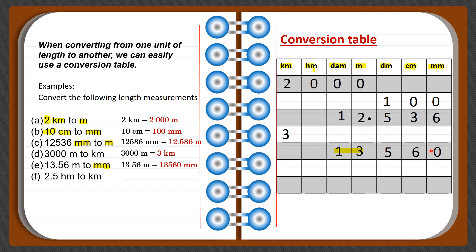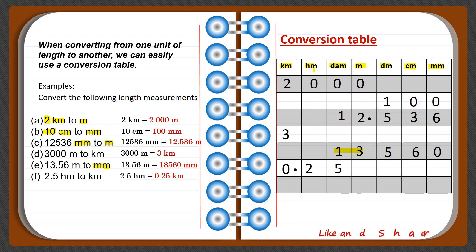We have 2.5 hectometers. First, locate the given unit — hectometer — and place the decimal point there. Fill in the digits according to their place values: 2.5 can be read as 2 hectometers and 5 decameters. Now locate the asked unit, kilometer, and place the decimal point there. Fill in zeros as needed, and remember never to write a decimal point without a digit before it. So 2.5 hectometers equals 0.25 kilometers.